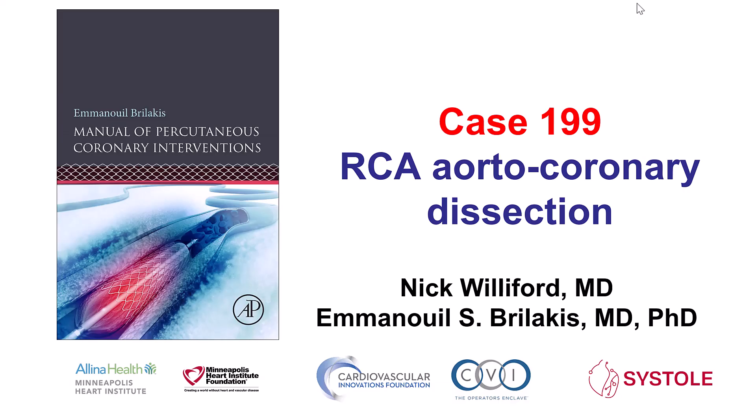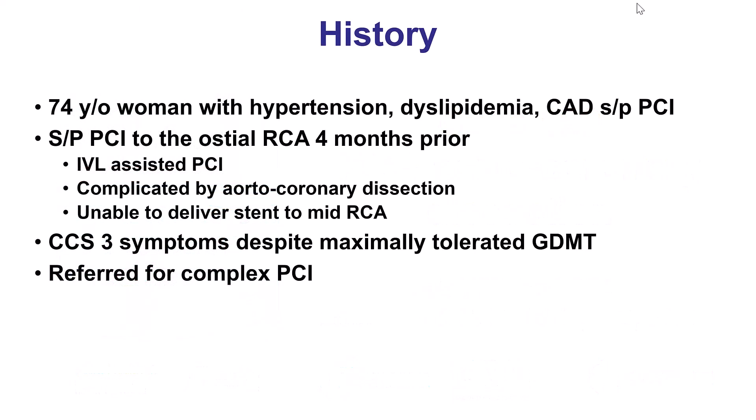This is a case of a patient who had an aortocoronary dissection of the right coronary artery. The patient was a woman who had an attempt for PCI of the right coronary artery. There was an aortocoronary dissection and inability to deliver a stent to the mid-right coronary artery with persistent symptoms. She therefore came for a repeat attempt.